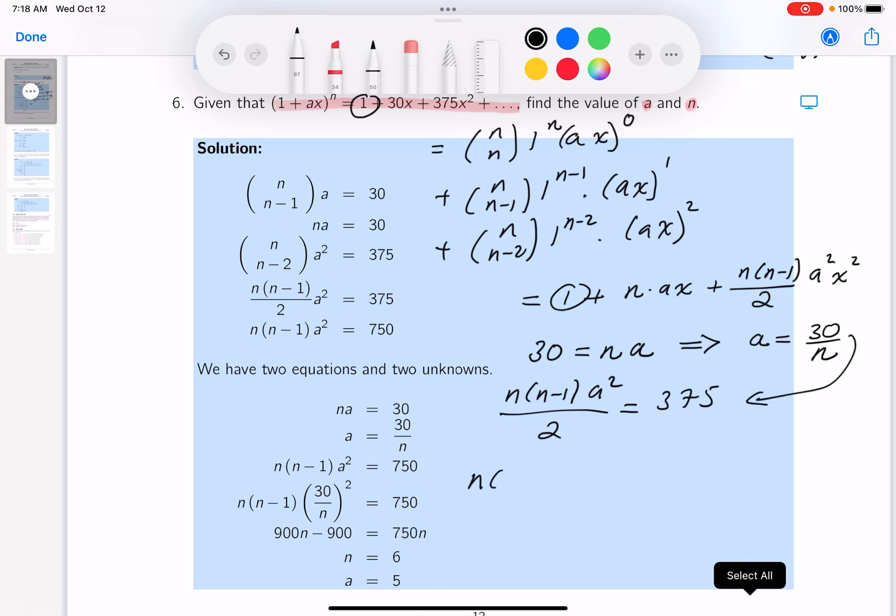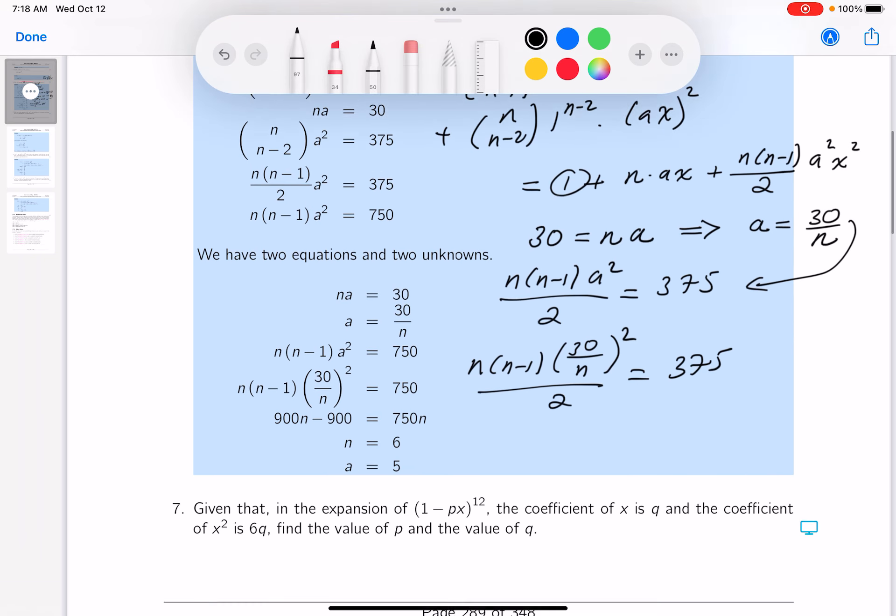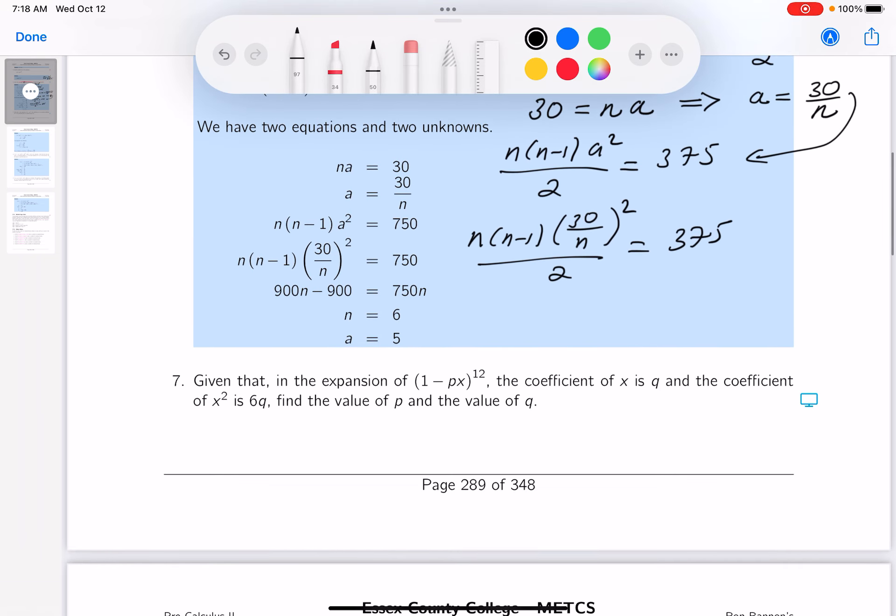What do you get? n times n minus 1, a squared, that's going to be 30 over n squared over 2 equals 375. So I have an equation of one unknown now. Let's figure it out.